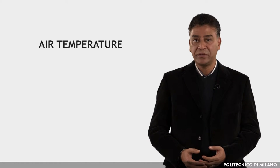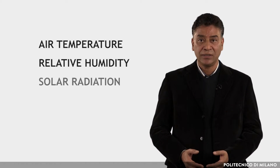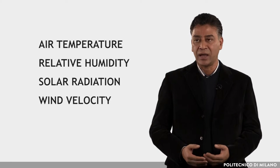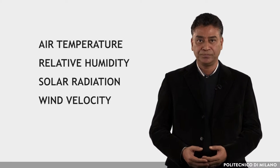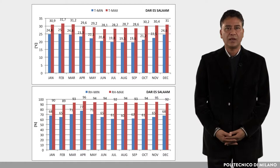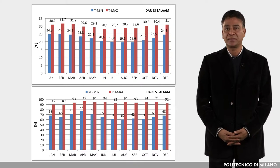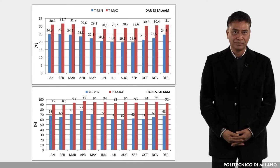For each climatic zone, the main parameters to develop the design studies are air temperatures, relative humidity, solar radiation, and wind velocity. As an example, we can see this for Dar es Salaam in Tanzania.